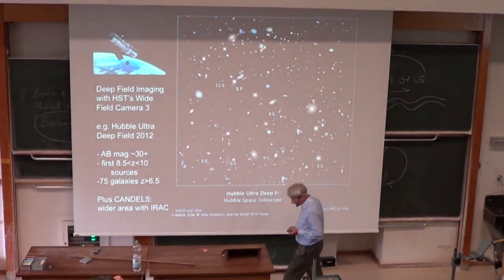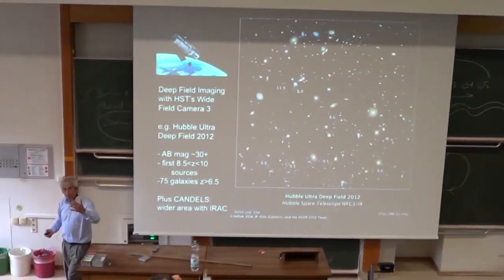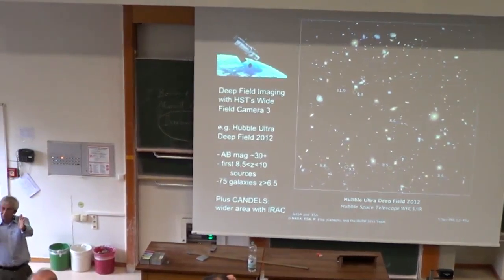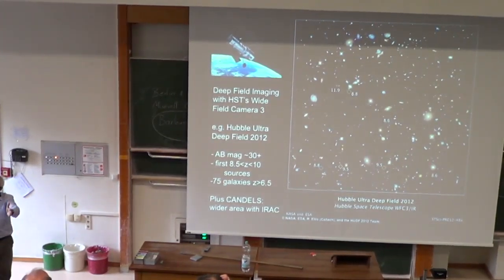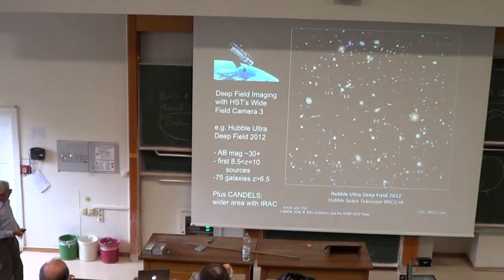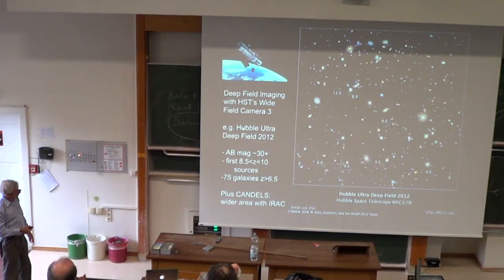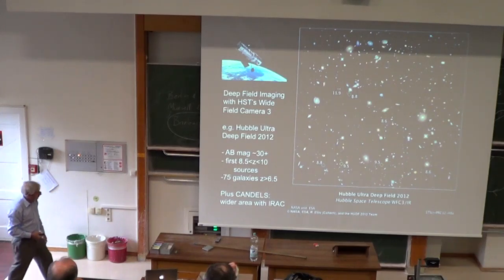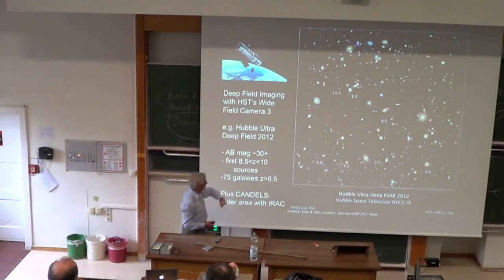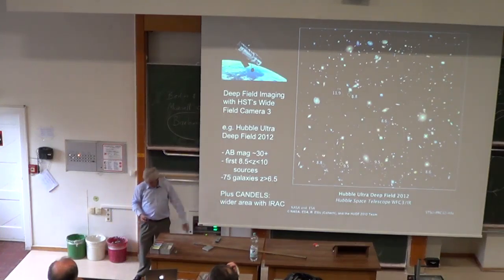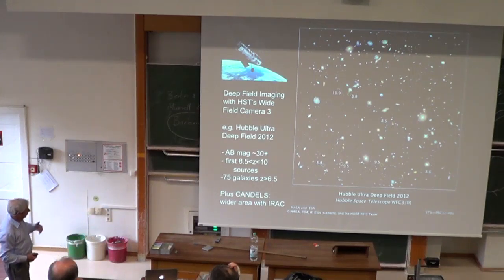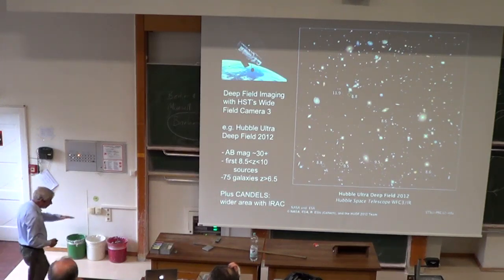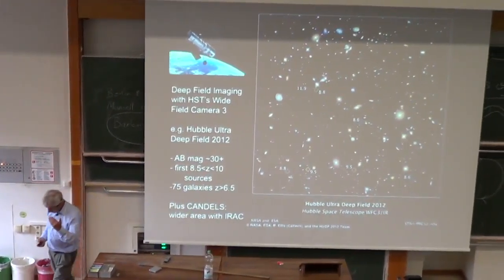There are two ways to probe the abundance of galaxies at early times. First, you can point Hubble and observe a single patch of sky for a very long time — as we did in our 2012 campaign, the Hubble Ultra Deep Field, reaching 30th magnitude. This gave us the first glimpse of galaxies in this redshift range and revealed large numbers of galaxies beyond the most distant quasars. There have since been further deep imaging surveys, including the CANDELS Survey, which is wider but not quite as deep.